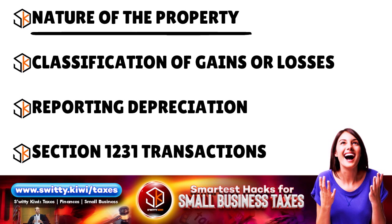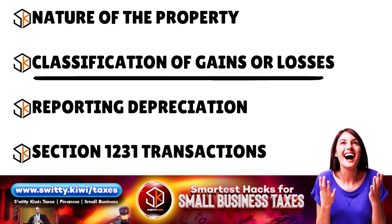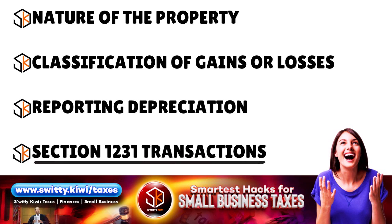Different rules apply depending on whether the property sold is considered ordinary or capital. Generally, property used in a trade or business is considered ordinary, while investment property is considered capital. The classification affects how gains or losses are reported and taxed. If the property being sold was previously depreciated, you must report the depreciation deductions taken in prior years by completing Part 3 of Form 4797, which calculates the depreciation recapture amount.